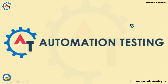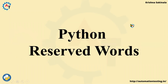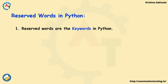Welcome to automation testing. In this video we will see Python reserved words. In our previous videos we have seen that we cannot use a reserved word as an identifier, but at that time we didn't know what a reserved word is. So in this video we will cover what reserved words are, how many there are in Python, and how to get that list. Reserved words are the keywords in Python — they are predefined, meaning Python has assigned a specific purpose to each of them.